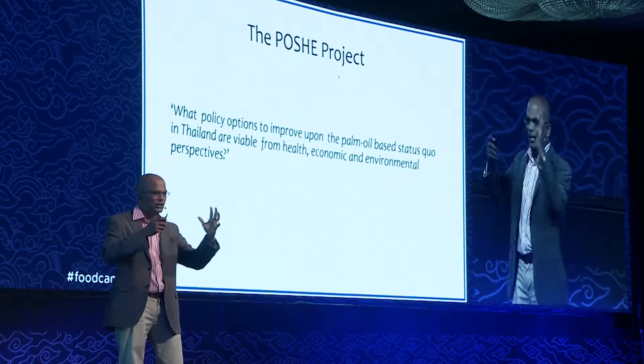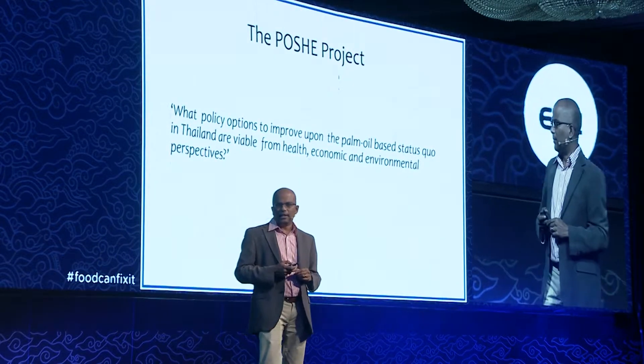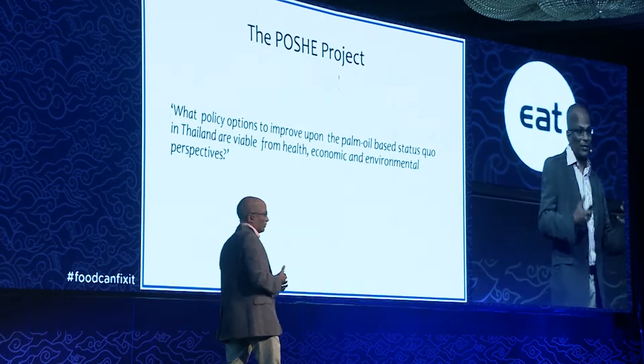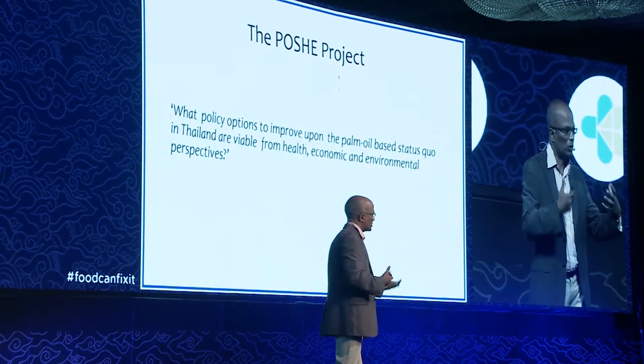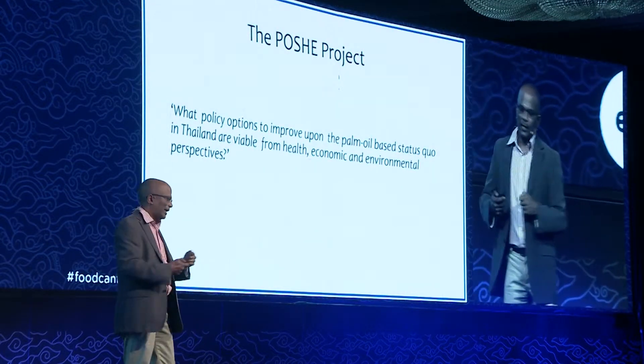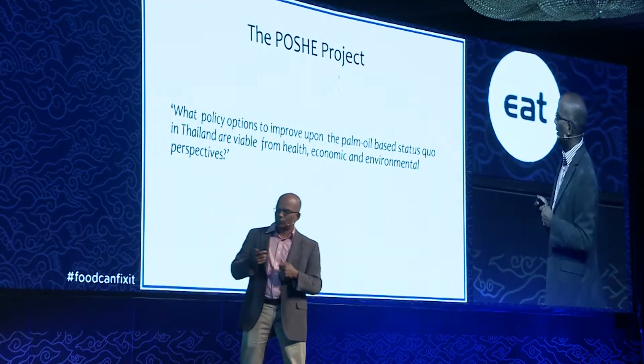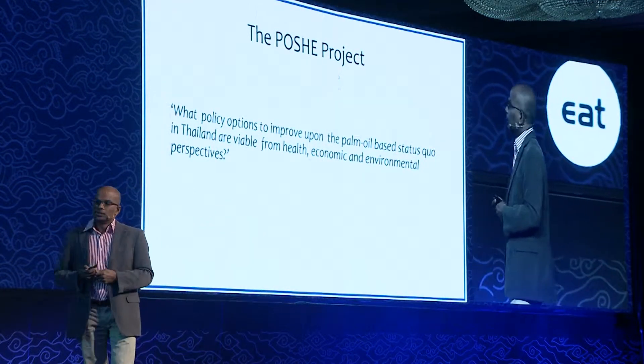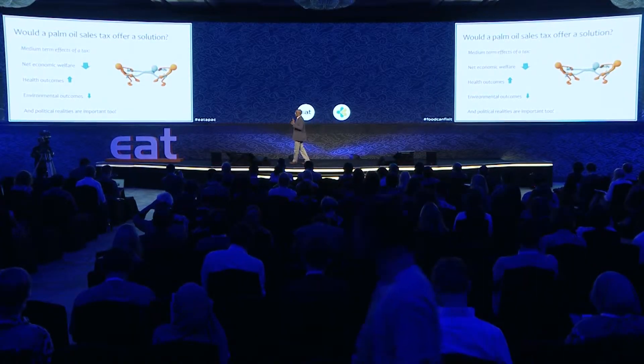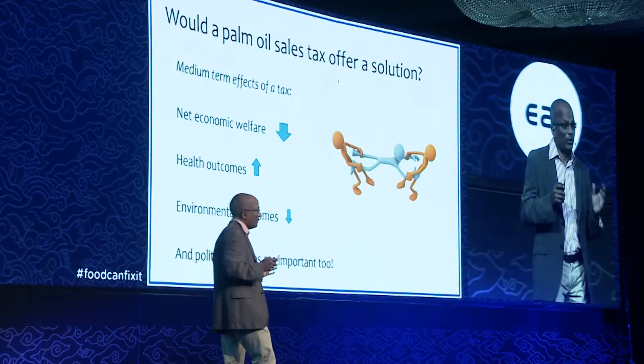Can we find solutions that optimize across the set of criteria? We take all the best available information in all these aspects and build simulation models to ask these questions. We have an economic model of the whole economy of Thailand within which the food sector and palm oil are located. We connect that to an epidemiological model of health outcomes arising from consumption changes, and also to a land use model which predicts greenhouse gas emissions when you change land use with regard to edible oil.